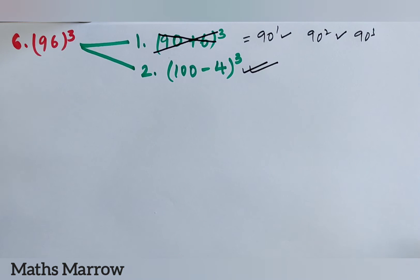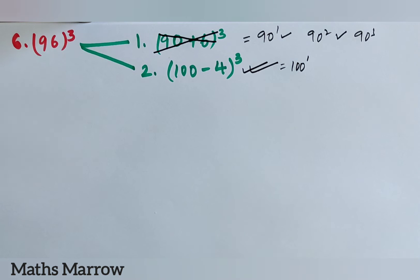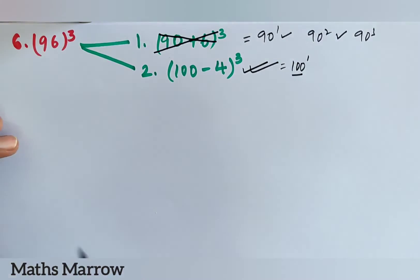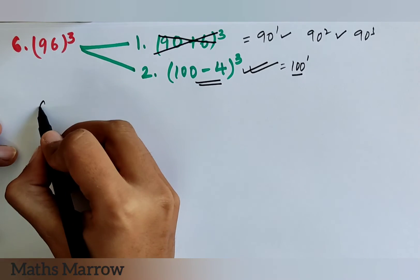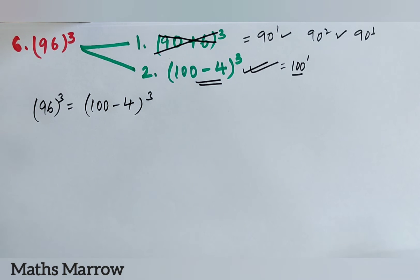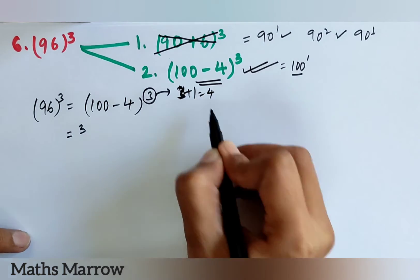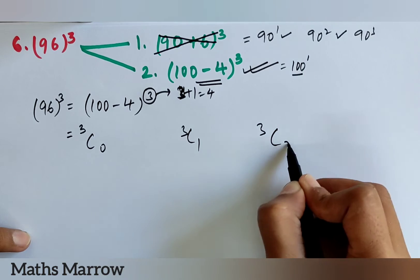How many calculations would you have to do? It will be difficult. So to avoid that difficulty, we take numbers like 100, and express our number as 100 minus something. For this question, we need to find 96^3, which we write as (100 - 4)^3. Since the power is 3, how many terms should there be? 3 plus 1 equals 4 terms: 3C0, 3C1, 3C2, and 3C3.